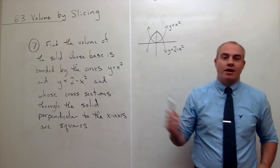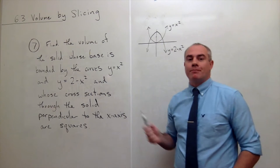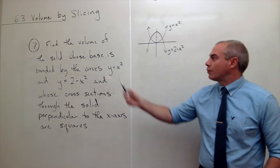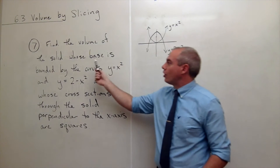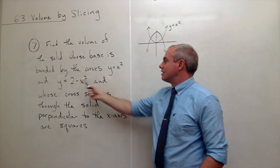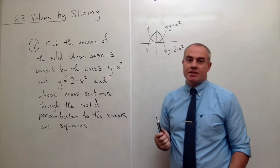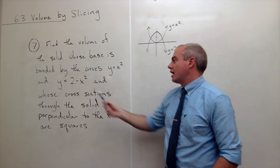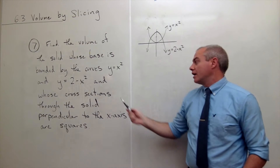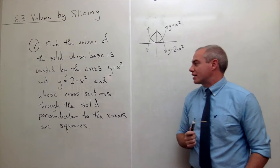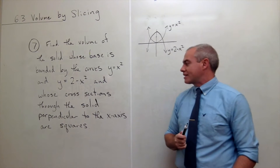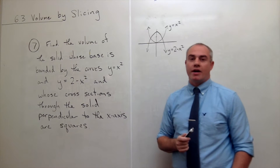We're going to start out with problem number 7. We want to find the volume of the solid whose base is bounded by the curves y equals x squared and y equals 2 minus x squared, and whose cross-sections through the solid perpendicular to the x-axis are squares.